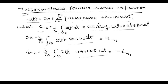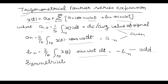You should also know that for an even signal, a0 and an would be present, and for an odd signal only bn will be present. So let's talk about some symmetricities in Fourier series. If x(t) equals x(minus t) then we call x(t) an even function, and then even terms like a0 and an would be present.